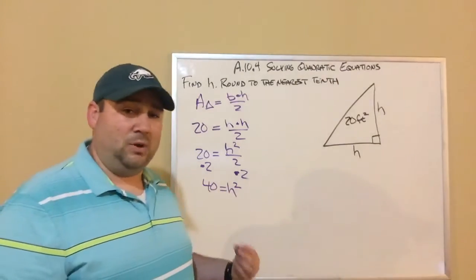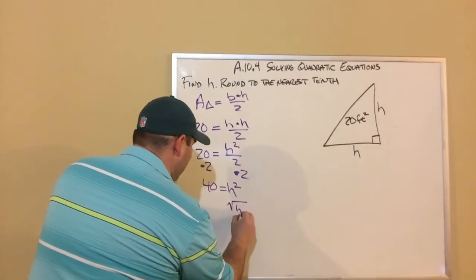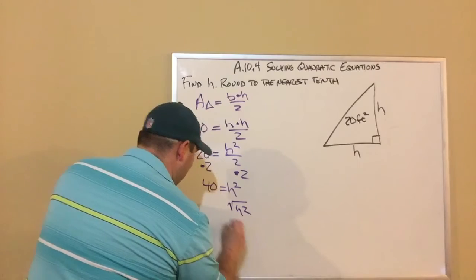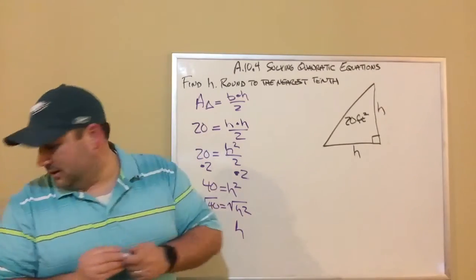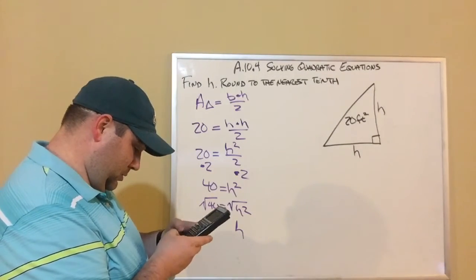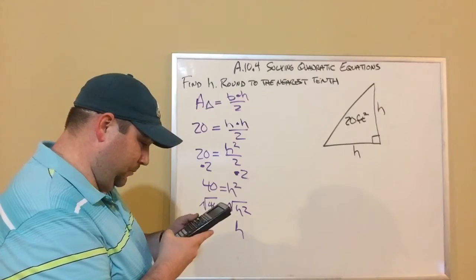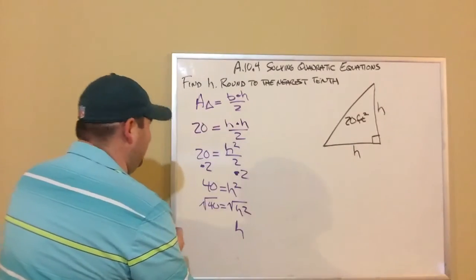And then this is just like example one. I've now just got to take the square root of both sides. So I take the square root of H squared because that's going to give me H. I take the square root of 40 and that's going to give me, hold on, I need my calculator. Square root of 40. I'm getting 6.3 because the directions told us to round to the nearest tenth.